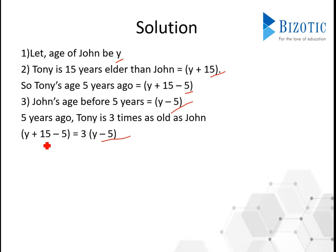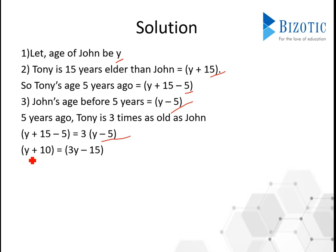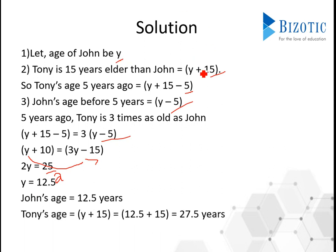All that you are left with now is simplification. So y plus 10 is equal to 3 multiplied by y minus 5, which gives 3y minus 15. Then 3y minus y and 15 plus 10 gives 2y equal to 25. So y is equal to 25 by 2, which is equal to 12.5. Note that 12.5 is not Tony's age — it's y, which is John's age. Tony's age is y plus 15, which is 12.5 plus 15, giving you 27.5 years. The answer is option B, 27.5 years.